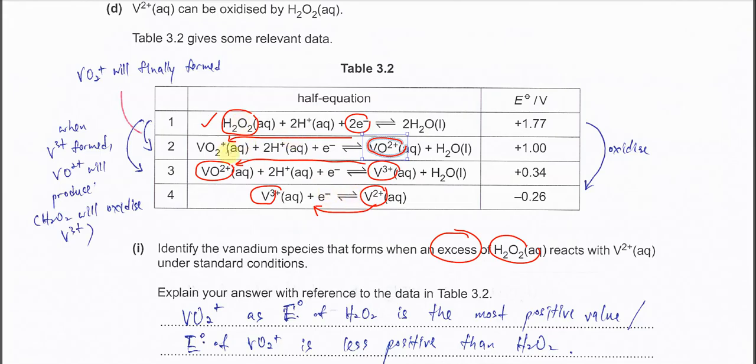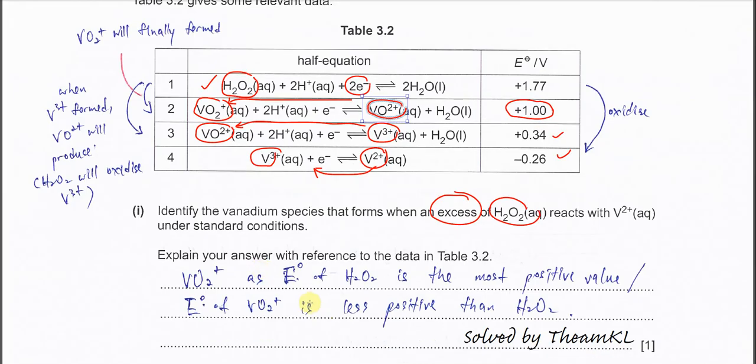Because this one is the more positive E⁰ compared to these two. So that's why it will end up here, VO₂⁺. So therefore the vanadium species that forms is VO₂⁺. Why? It's very easy. Just explain.